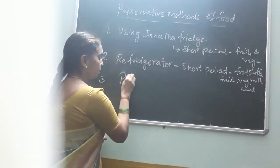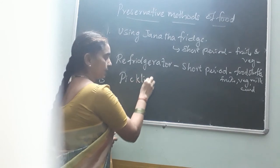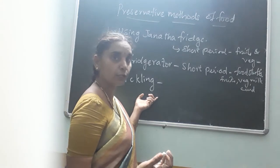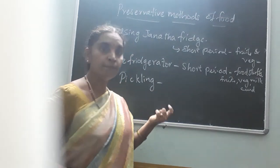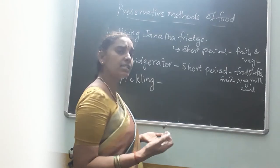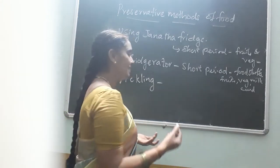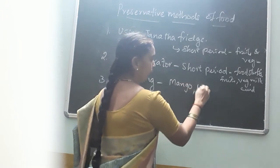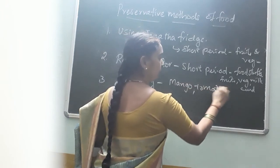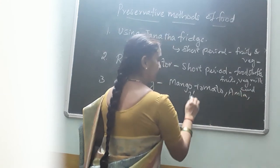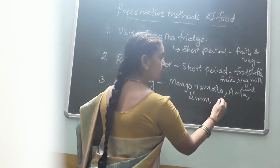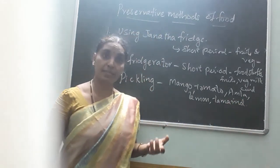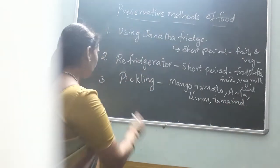In the pickling process, what are the different examples? You can use them for a longer period — for about a year. Examples are mango, tomato, amla, lemon, tamarind pickles, and meat pickles are also prepared by some. In the pickling process, the items used are salt, turmeric, chilli powder, and oil.